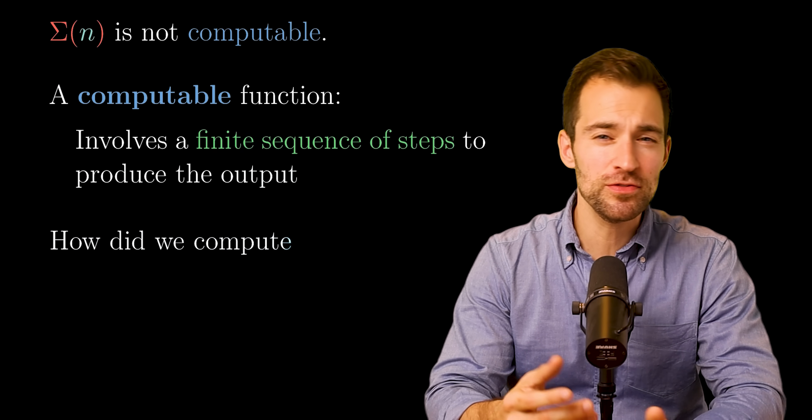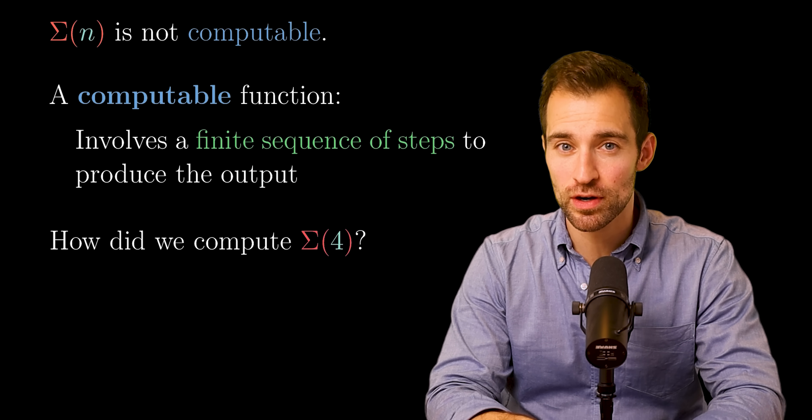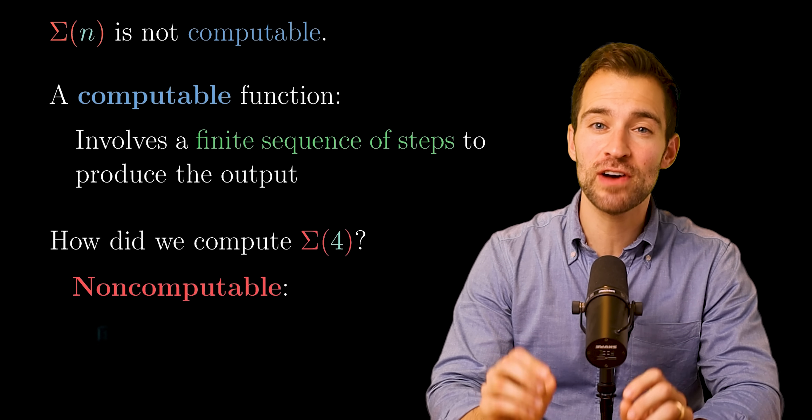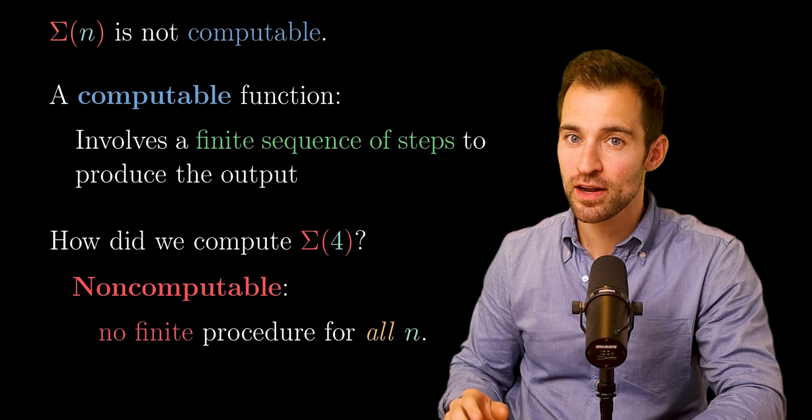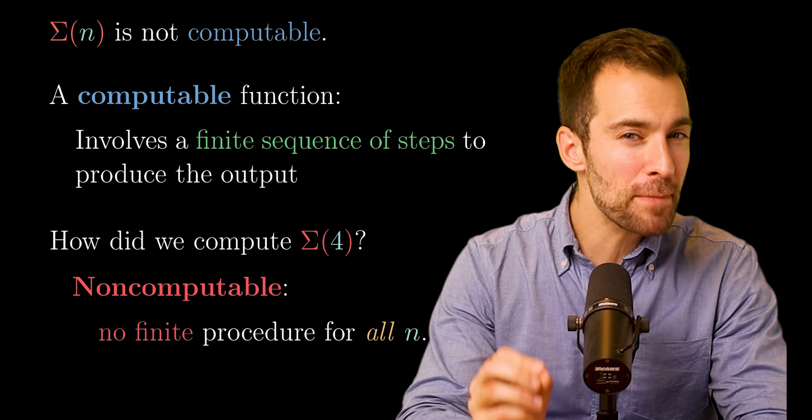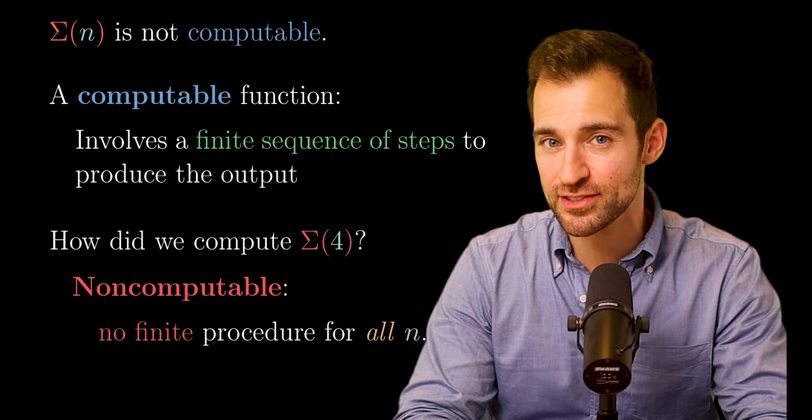So, you may ask, how can we compute these for any numbers, like sigma 4? Well, that's a subtlety. The non-computability comes from the lack of a finite procedure for all n. But for a specific n, which brings a finite set of machines, we might be able to analyze our way to the answer.